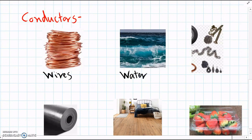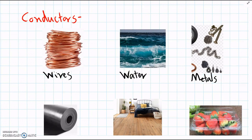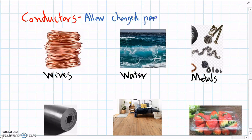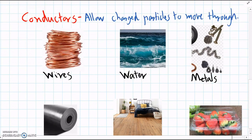water — as long as it has a little bit of salt in it, so particularly seawater — and other metals. These are all conductors because they allow charged particles to move through them quite easily.